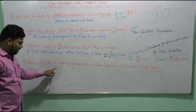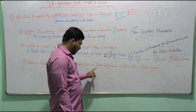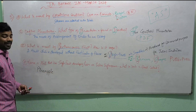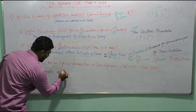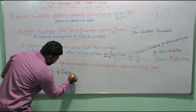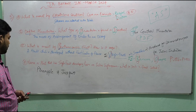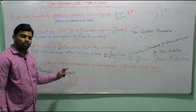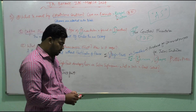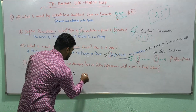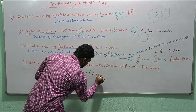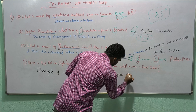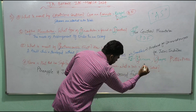What is the fourth question? 'Name a plant that has a single fruit developing from an entire inflorescence.' Examples are pineapple and jackfruit — a single fruit develops from an entire inflorescence. Such a fruit is called a composite fruit or compound fruit.